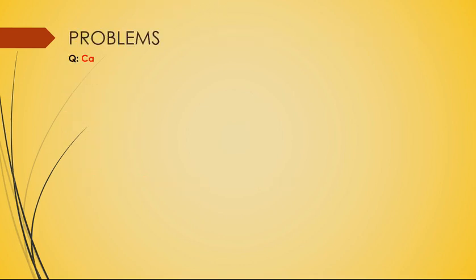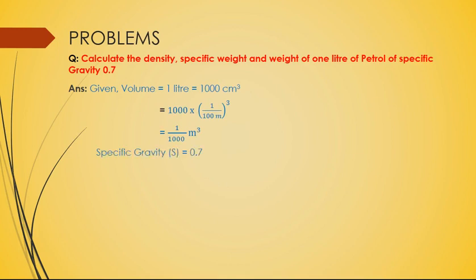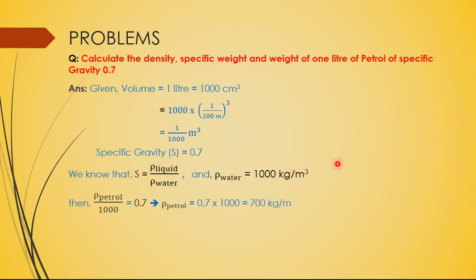Now let's solve a problem: calculate the density, specific weight, and weight of one liter of petrol with specific gravity 0.7. The given volume is 1 liter = 1000 cm³ = 1/1000 m³. Since specific gravity = ρ_petrol / ρ_water, and ρ_water = 1000 kg/m³, we get: 0.7 = ρ_petrol / 1000, therefore ρ_petrol = 0.7 × 1000 = 700 kg/m³.